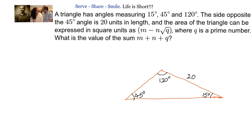A triangle has angles measuring 15 degrees, 45 degrees, and 120 degrees. The side opposite the 45-degree angle is 20 units in length. We have to find the area of the triangle and express it in the form m minus n root q, where q is a prime number, and find the value of m plus n plus q. We can solve this problem in several ways.